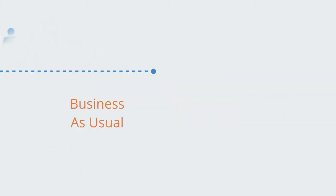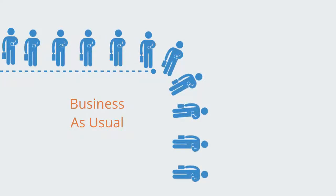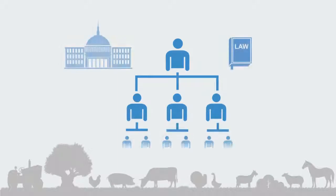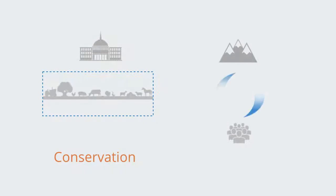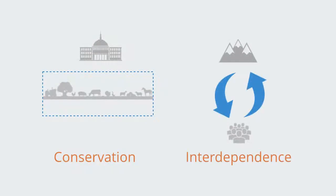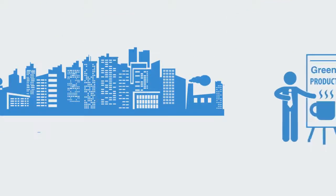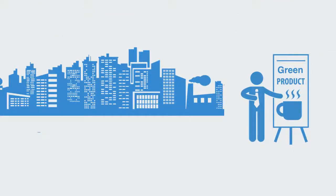Generating an appropriate response within our economic systems of organization to this profound transformation will clearly not be a business-as-usual scenario. Our traditional approach to macro-scale environmental management has been exercised through a top-down centralized model, driven by government institutions and based on the paradigm of environmental conservation. But this is no longer relevant in an age when industrial activity has become an embedded part and central driver of change within virtually all ecosystems around the planet. Ecosystems management can no longer be an ad-hoc solution patched onto the side of the economy — it must become a central part of what the economy is and does.